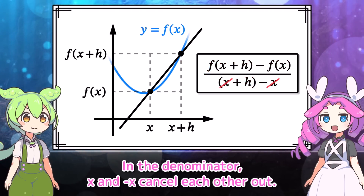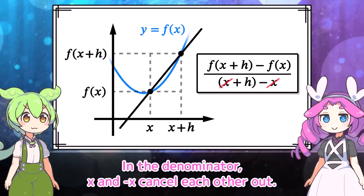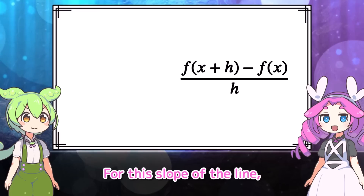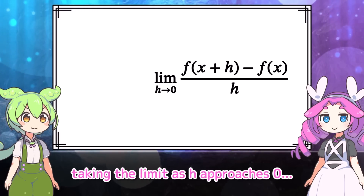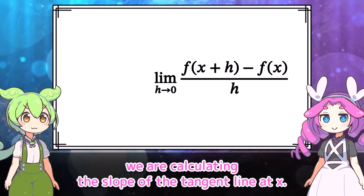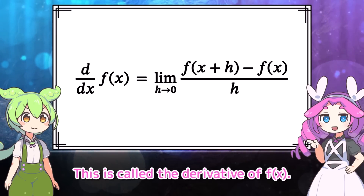Well done! In the denominator, x and minus x cancel each other out, so in the end only h remains. For this slope of the line, taking the limit as h approaches zero, we're calculating the slope of the tangent line at x. This is called the derivative of f of x.